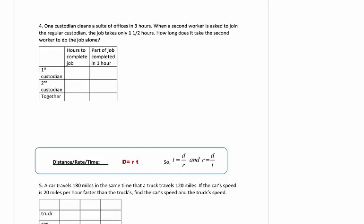So, reading this problem, we have one custodian that can clean a suite of offices in 3 hours. So I'm going to put the 3 for the time. And I have a rate, which means the first custodian's rate is 1 third. A second worker is asked to join. The job takes only 1 and 1 half hours. And this is where you're going to be careful. The 1 and 1 half is when they're working together. So that is in this spot here. How long does it take the second worker to work the job alone? So the second worker's time by themselves is our variable we're trying to find, which means their rate is 1 over x.